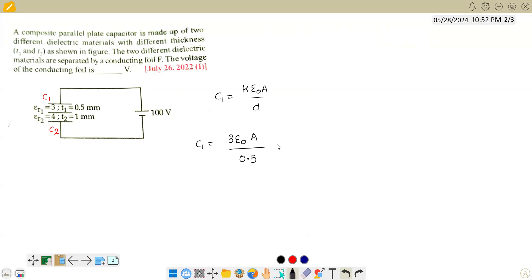Right now, let us not go for units because not that much is required. So, I can write 6 epsilon naught A. So, let us try to find C2. C2 value is again K2 epsilon naught A by D. So, 4 epsilon naught A by D is 1. So, we will get it as 4 epsilon naught A.